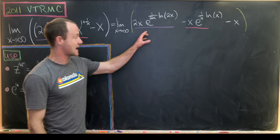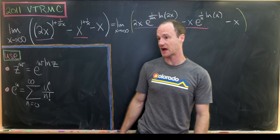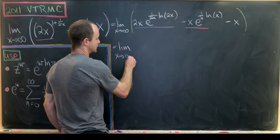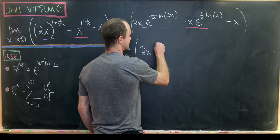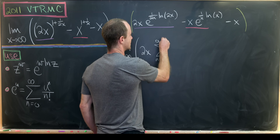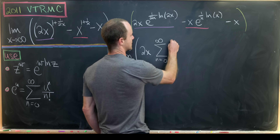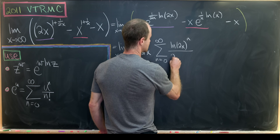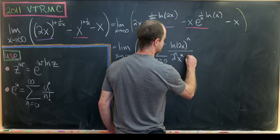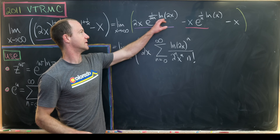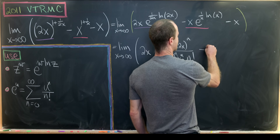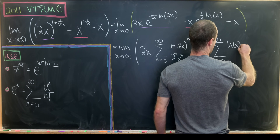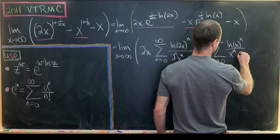From here, we expand each of these exponentials using our second rule — the Maclaurin series. We get the limit as x goes to infinity of 2x times the sum from n equals 0 to infinity of (natural log of 2x) to the n over (2 to the n times x to the n times n factorial), minus x times the sum from n equals 0 to infinity of (natural log of x) to the n over (x to the n times n factorial).